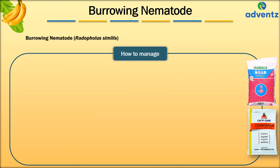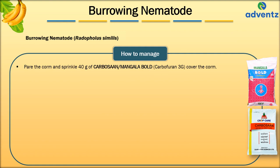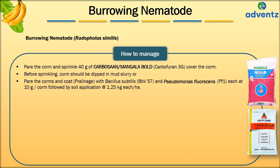To manage Burrowing Nematode: pare the corm and sprinkle 40 grams of Carbosan or Mangala Gold (Carbofuran 3G) over the corm; before sprinkling, the corm should be dipped in mud slurry. Pare the corms and coat with Bacillus subtilis (BBV57) and Pseudomonas fluorescens PF1, each at the rate of 10 grams per corm, followed by soil application at the rate of 1.25 kg each per hectare.